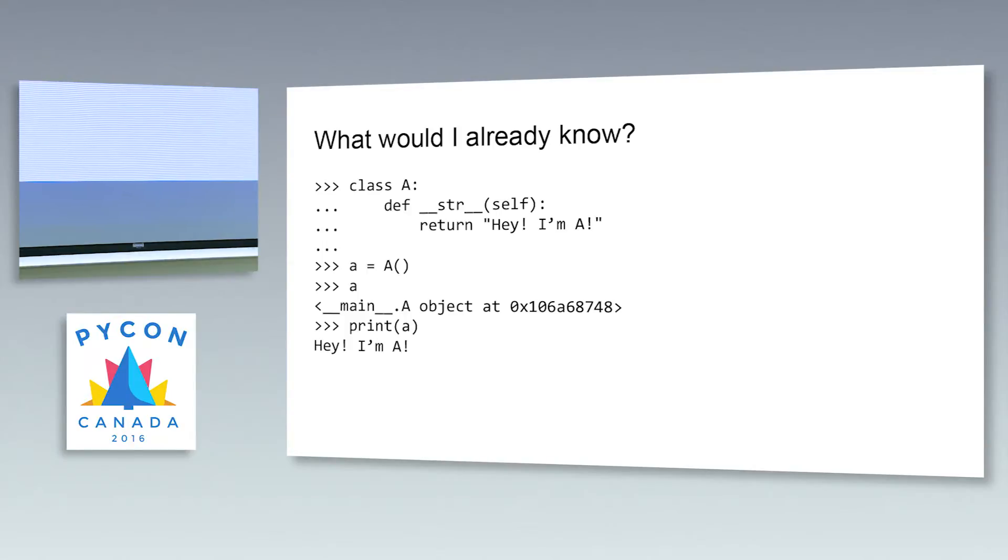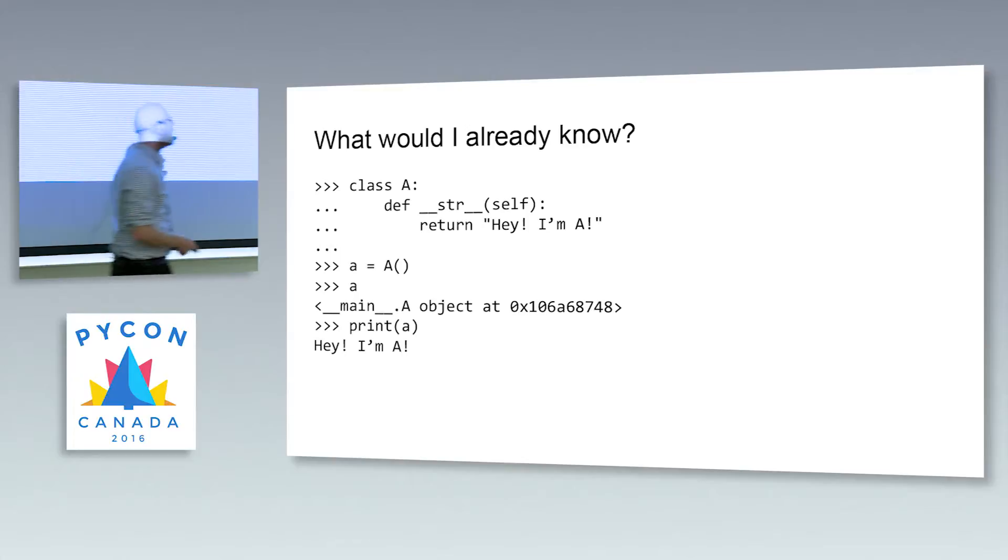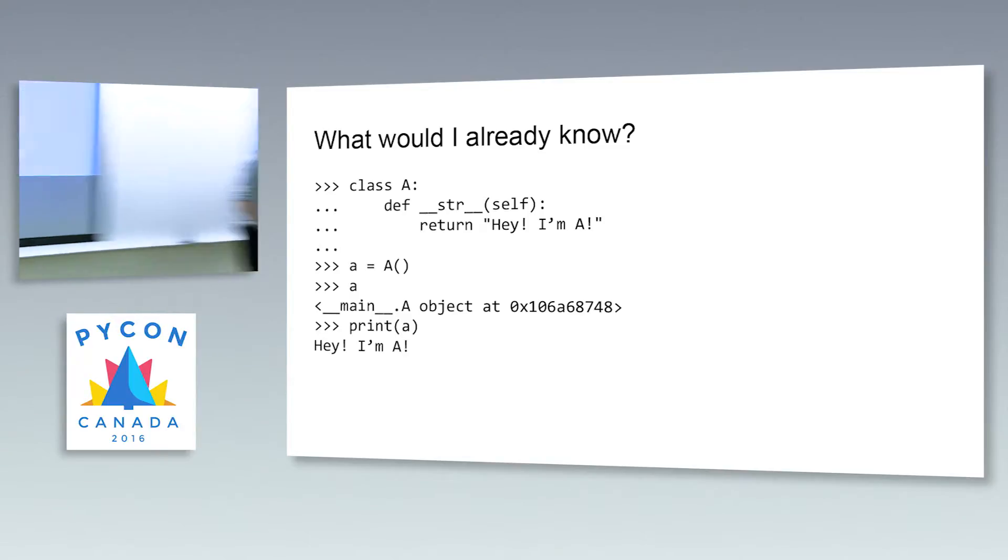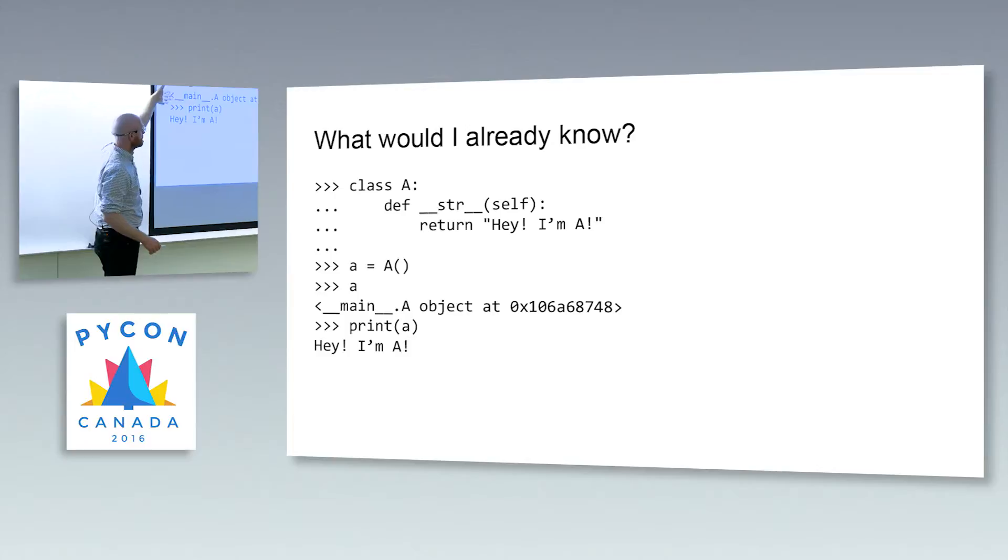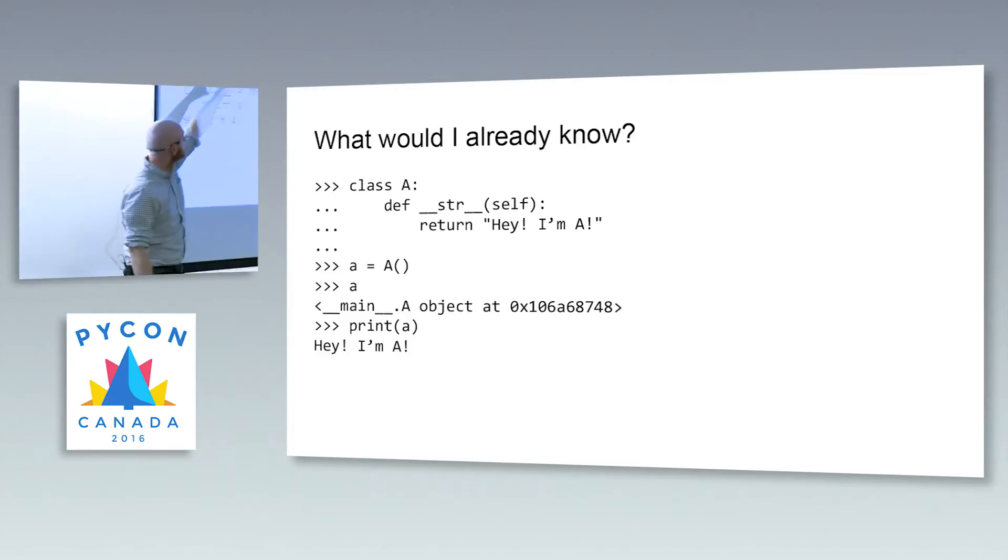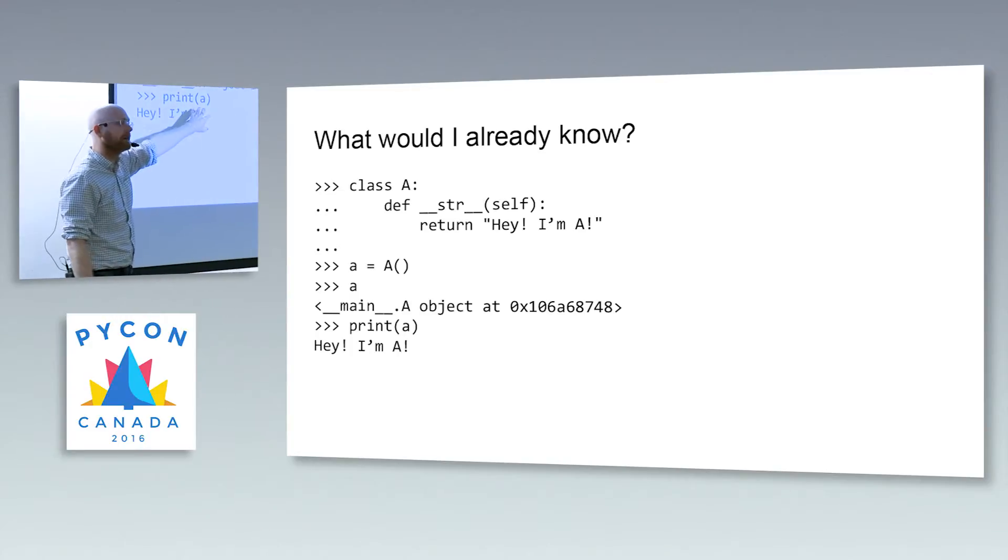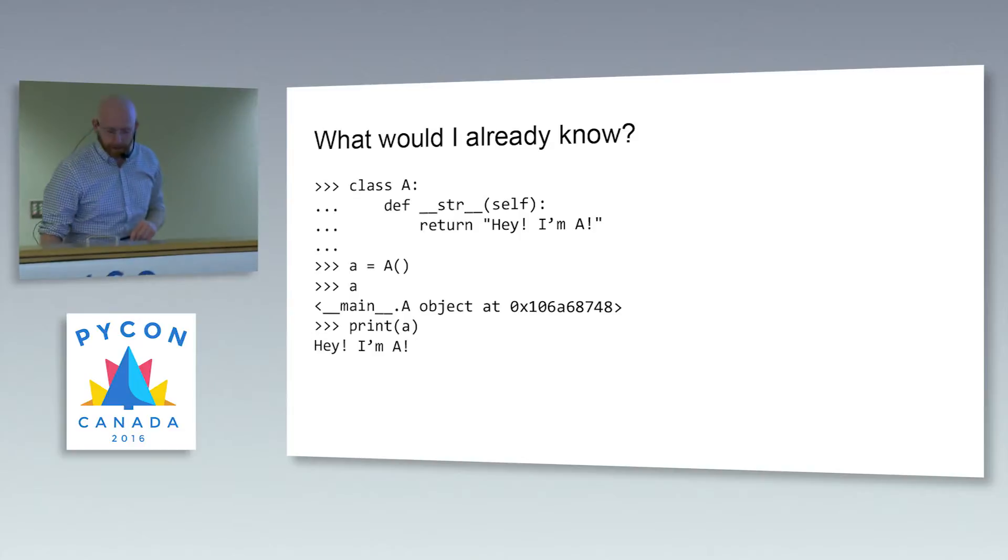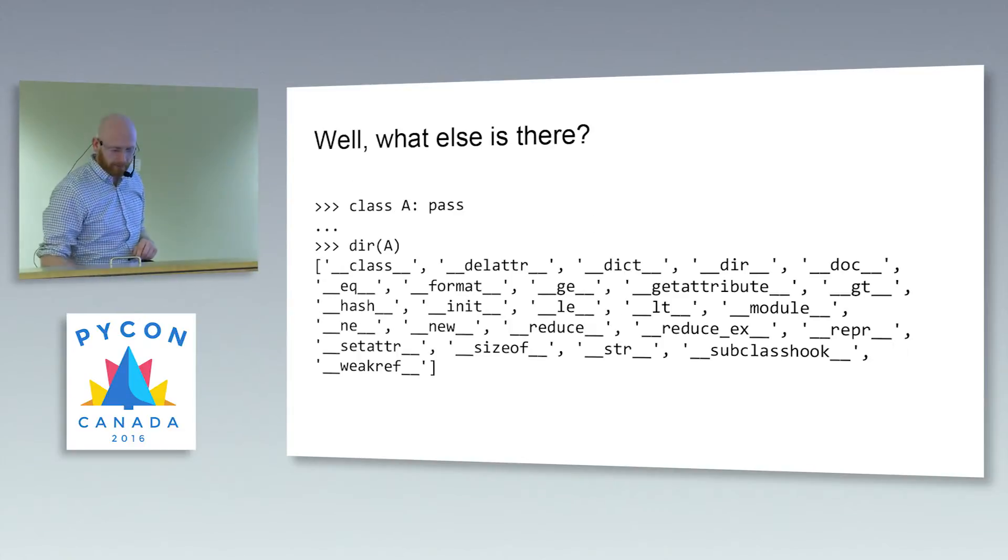What are some of the Dunder methods that you might already have played around with and know? One is dunder string, right? We can define this and we can have instances of our class express themselves via the print statement in a much different way than maybe we're used to in the REPL. By defining the dunder string method, we can pass an instance of this class to print and get it to print in a very customized way.